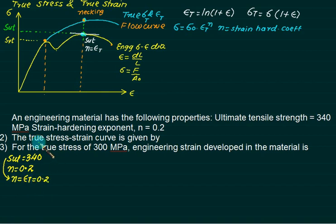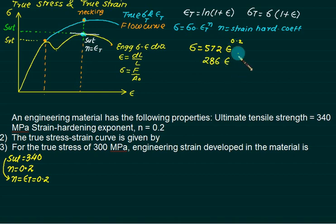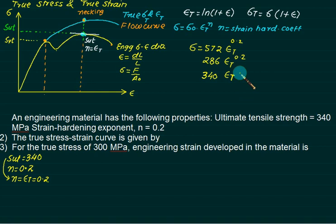We have to find the true stress-strain curve equation. The equation is in the form σ = σ₀ · εₜⁿ. One option is σ = 572 · εₜ^0.2; another option is σ = 286 · εₜ^0.2; a third option is σ = 340 · εₜ^0.2. We need to find which one is the correct equation.